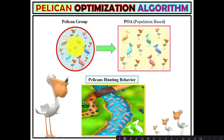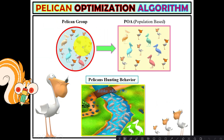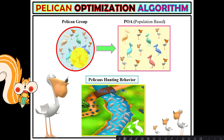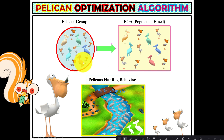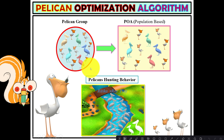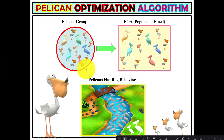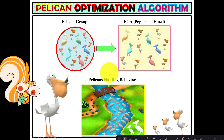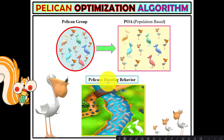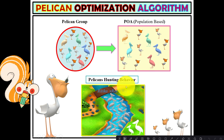A pelican group is also known as a pelican colony or flock. Pelicans often form large groups with group size up to 100. In the Pelican Optimization Algorithm, we consider a virtual environment with virtual pelicans to simulate this behavior.